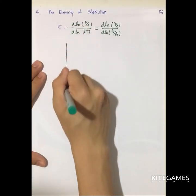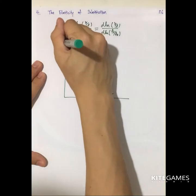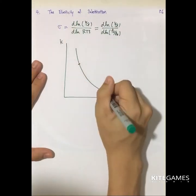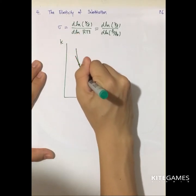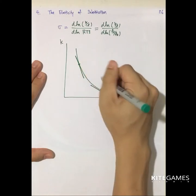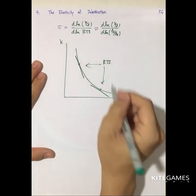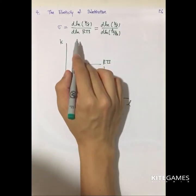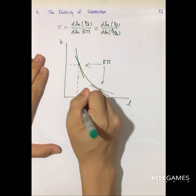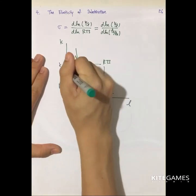Diagrammatically, you have an isoquant. The elasticity of substitution is actually measuring — say from point A to point B — the slope, which is the RTS. So the elasticity of substitution is investigating the change in the slope of RTS with respect to change in the capital-to-labor ratio.